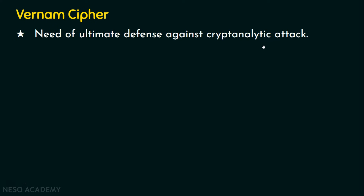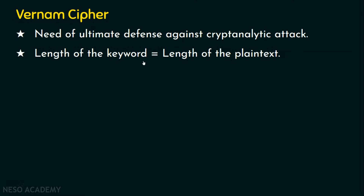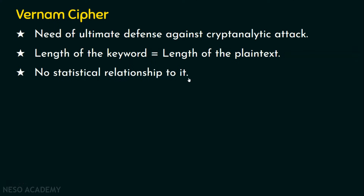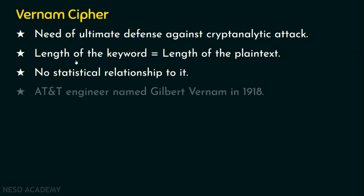In the last lecture on Vigenère cipher, we saw that the keyword is repeated, which gives room for the attacker to find the key or the plaintext, because the key is repeated and its length has statistical significance. So definitely the length of the key should be as long as the length of the message, so that there is no repeating keyword and no statistical relationship.